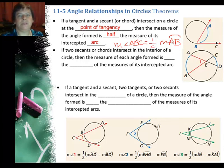And if you want to fill in the rest of your sentence. So when it intersects on the circle at a point of tangency, remember this right here is the point of tangency. And so the angle formed is half the measure of the arc.